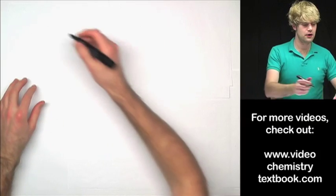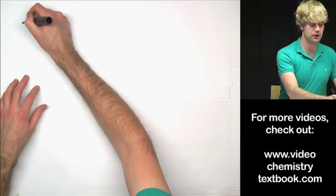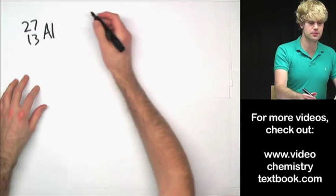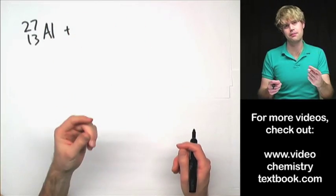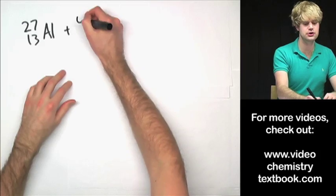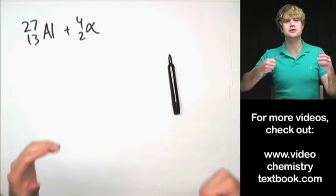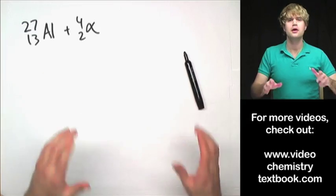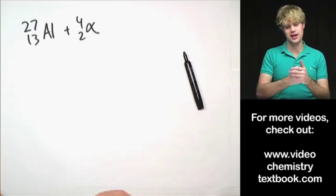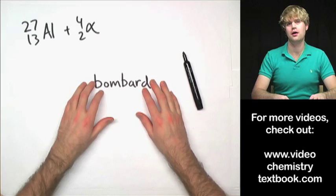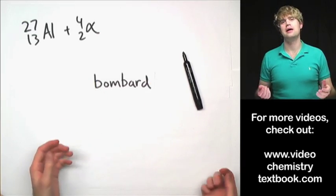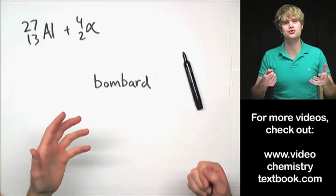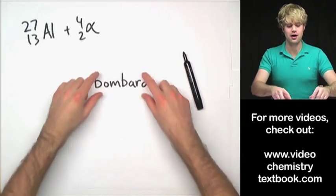Let's do another example. I'm going to start with an atom of aluminum-27, and as before, I'm going to take an alpha particle — two protons and two neutrons — and slam it into this aluminum. There's a fancy word for slamming, and it's a good word to know: it's called bombard. A lot of times when we're talking about slamming alpha particles or protons and neutrons into an element, we use the term bombard.